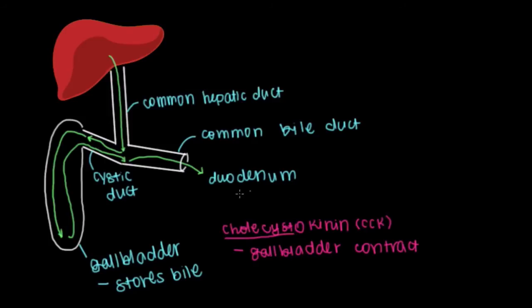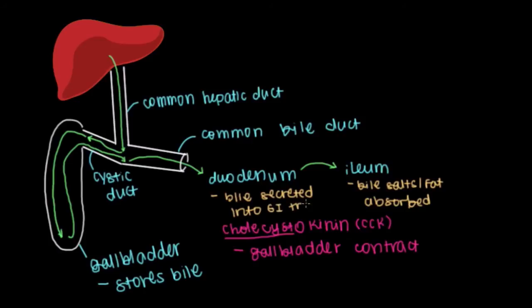The fat isn't absorbed in the duodenum. In fact, the bile salts with our newly emulsified fat from our food will travel along to the ileum. Remember, the ileum is the last part of our small intestine. This is where our bile salts and our emulsified fats are absorbed. The ileum is where absorption of our bile salts and fats occurs. The duodenum is where bile is secreted into the GI tract.